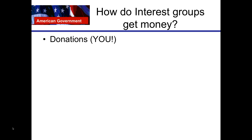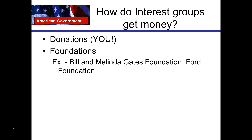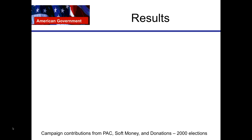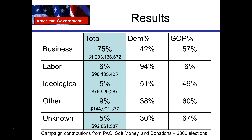How do interest groups get money? They take donations, get money from foundations such as the Bill and Melinda Gates Foundation and the Ford Foundation, and sometimes get money from grants and contracts from the federal government. As you can see from the 2000 election data, most of the money raised was from business groups, which is why elite theory proponents believe that business groups have the most power and influence.